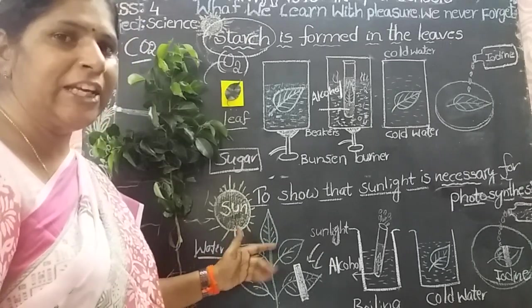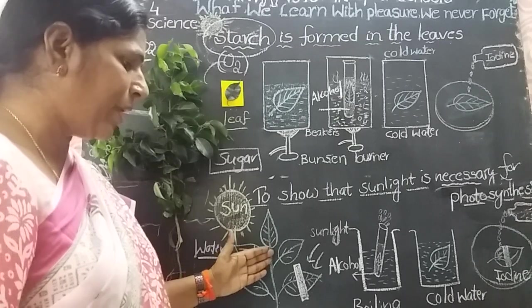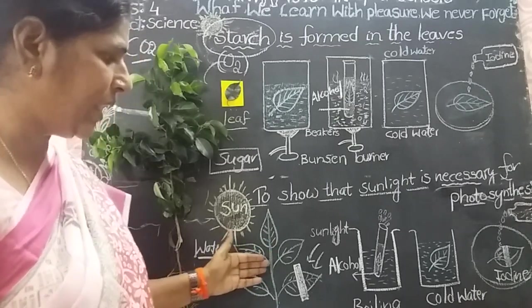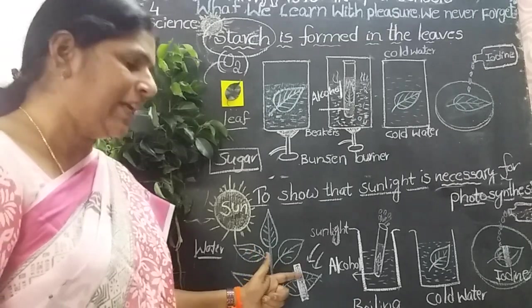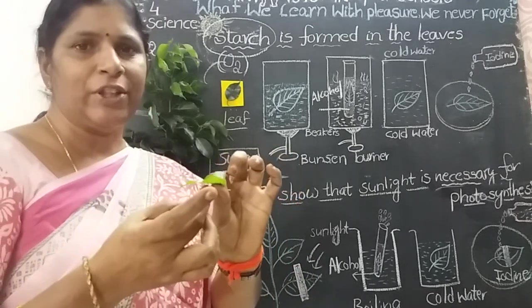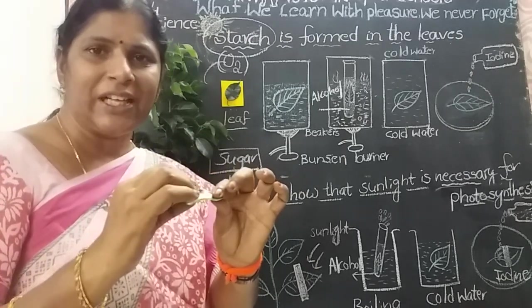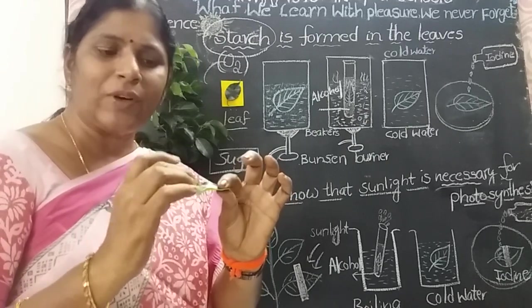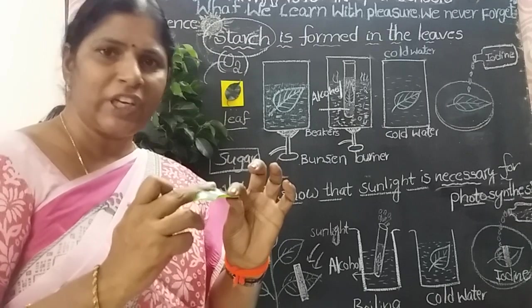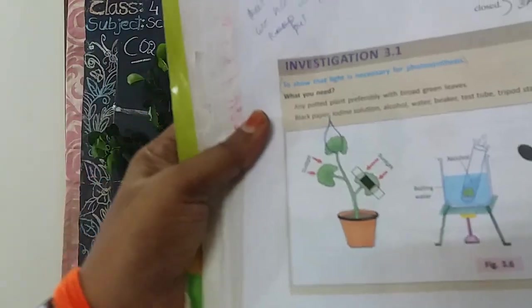Take one potted healthy plant, keep it in the dark room for 24 hours. Cover one of its leaves on the upper and lower sides with black paper. Sunlight does not reach that covered part. Keep the pot in sunlight for at least 5 or 6 hours. Cover a part of the leaf with black paper on both sides — upper side and lower side.